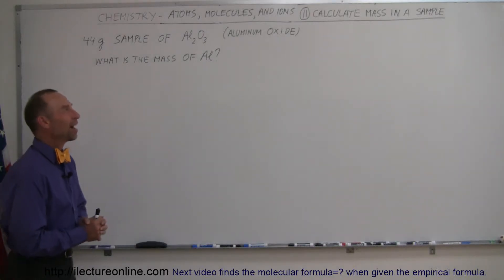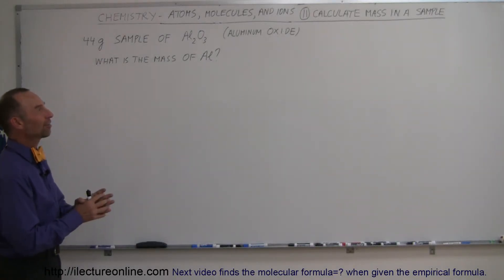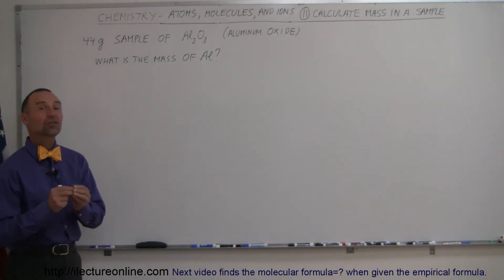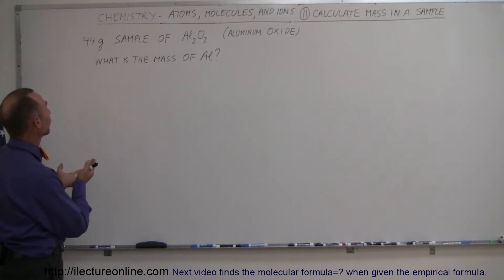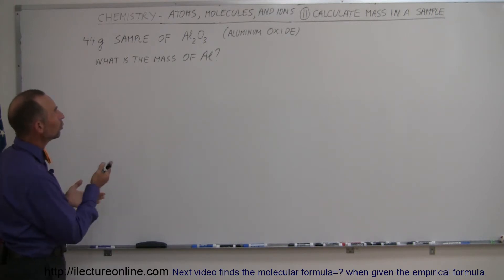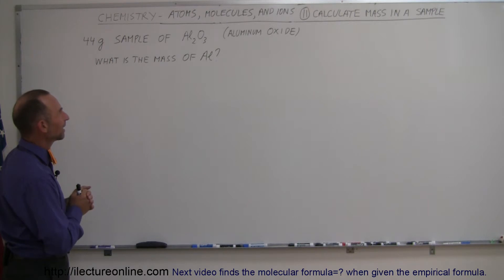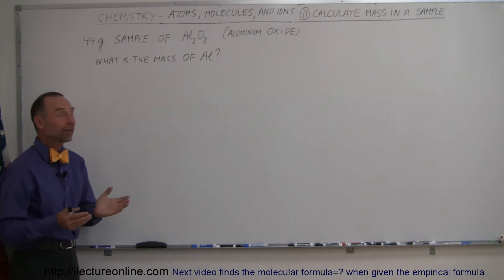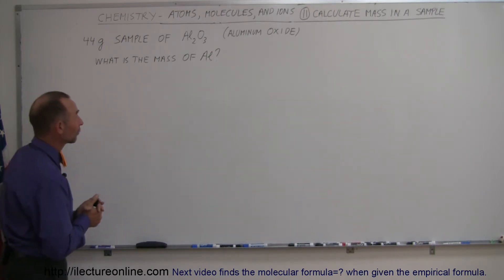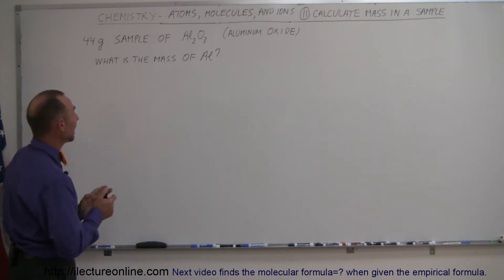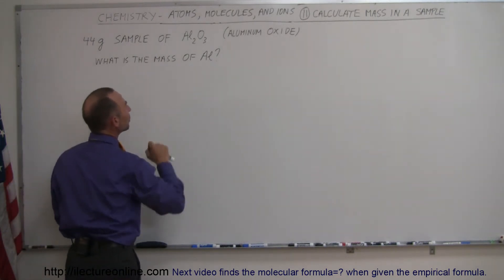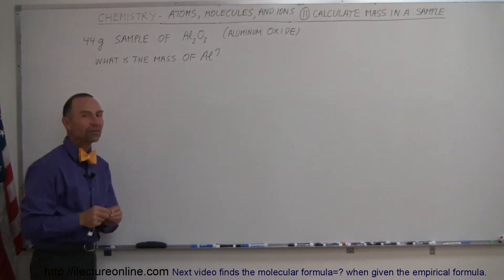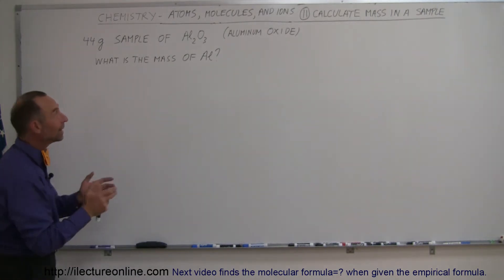Here we have an example of how to find the mass of a particular constituent in a sample. Let's say we have a 44 gram sample of aluminum oxide. Al₂O₃ is the molecular formula for aluminum oxide, and you're supposed to find how much of that is aluminum — what is the mass of the aluminum within that sample?